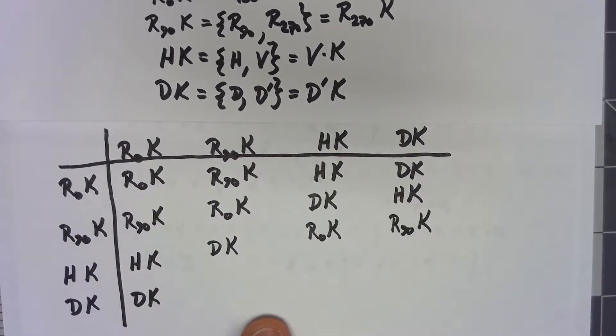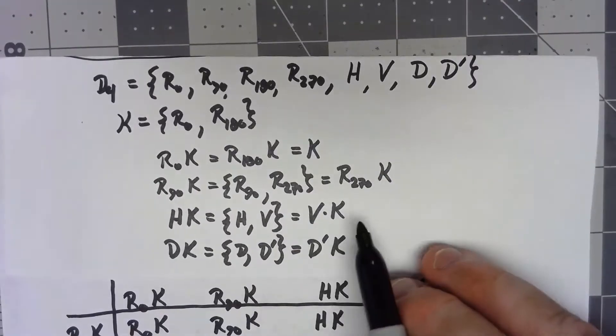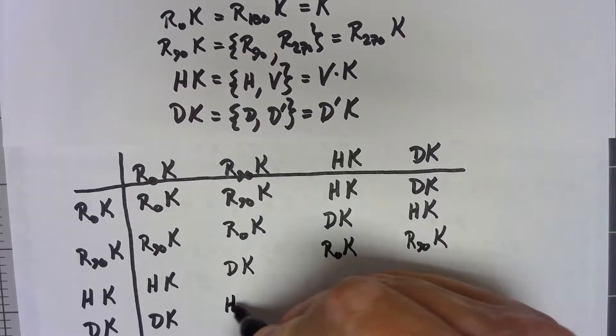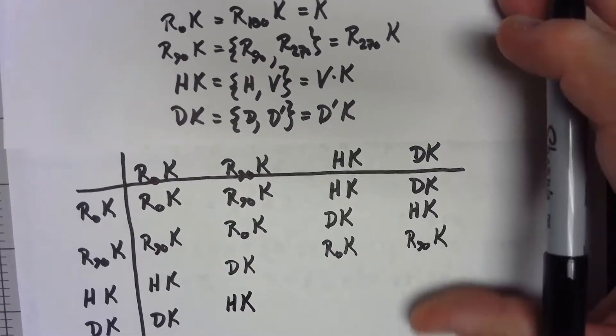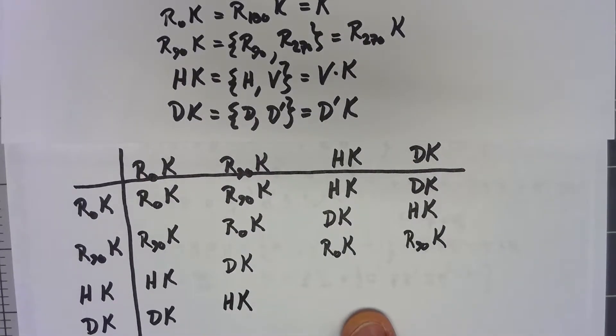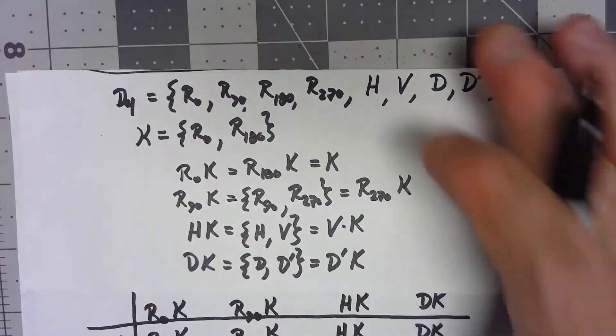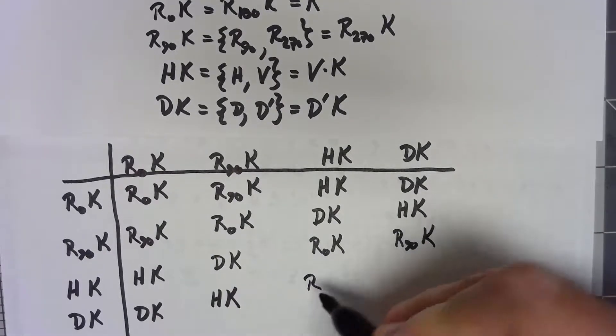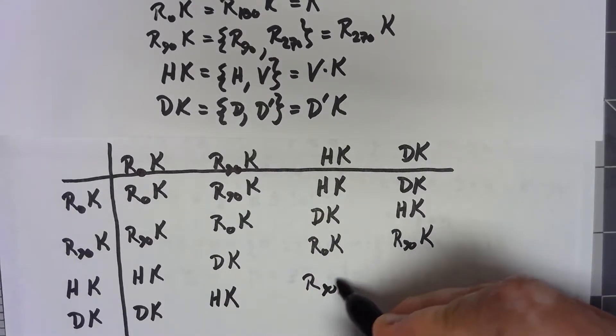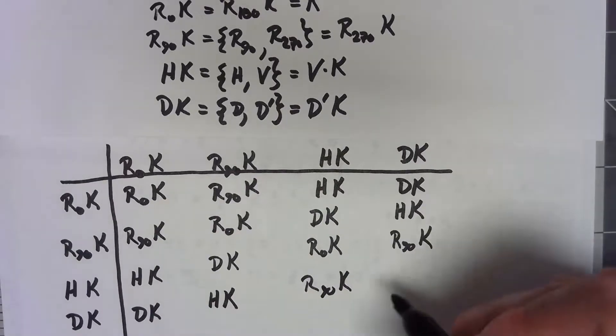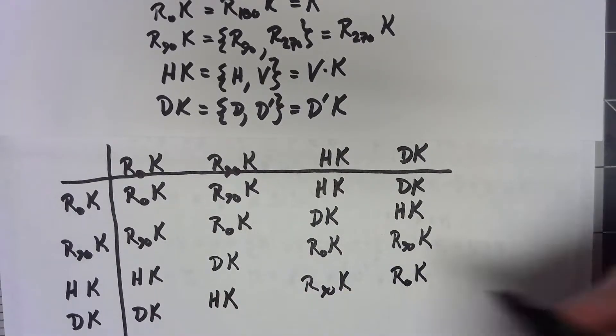D times R90K is V, so we have VK, but VK is the same as HK. D times H is R270K, so we have R270K, which is the same thing as R90K. Finally, D times D is the identity, so we have R0K.